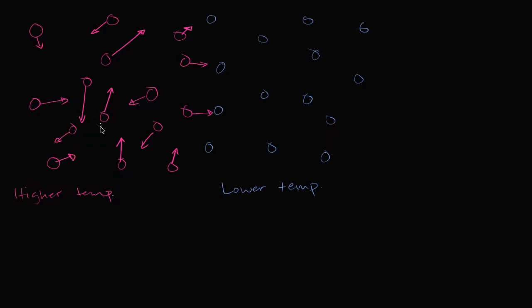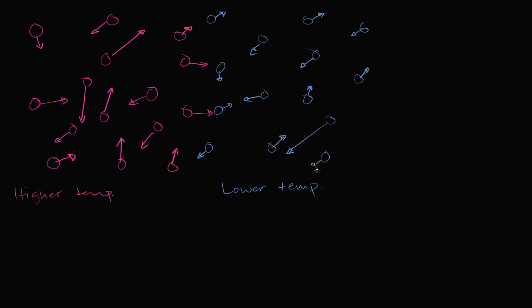They're all bumping into each other, transferring their kinetic energy and momentum from one particle to another. When we talk about temperature, we're talking about the average kinetic energy of the system. Each of the blue molecules is also going to have some kinetic energy, but on average it's going to be lower. So the magenta arrows are bigger than the blue arrows. For example, one blue molecule might have a lot of kinetic energy, but if you average it out, the average is going to be lower.